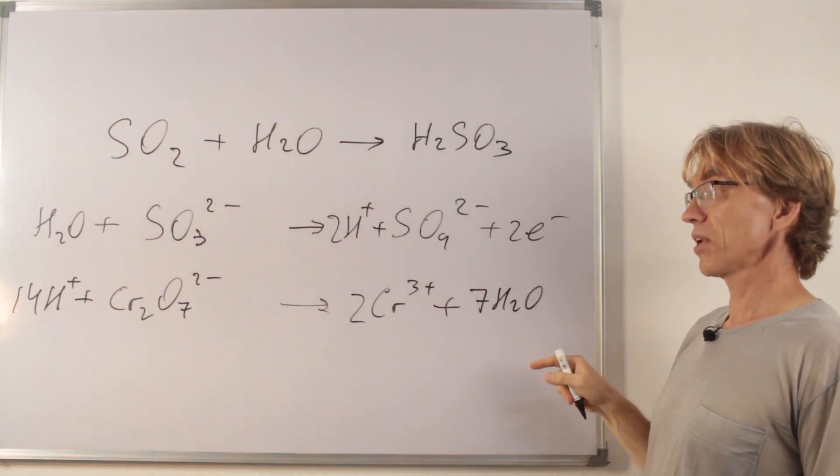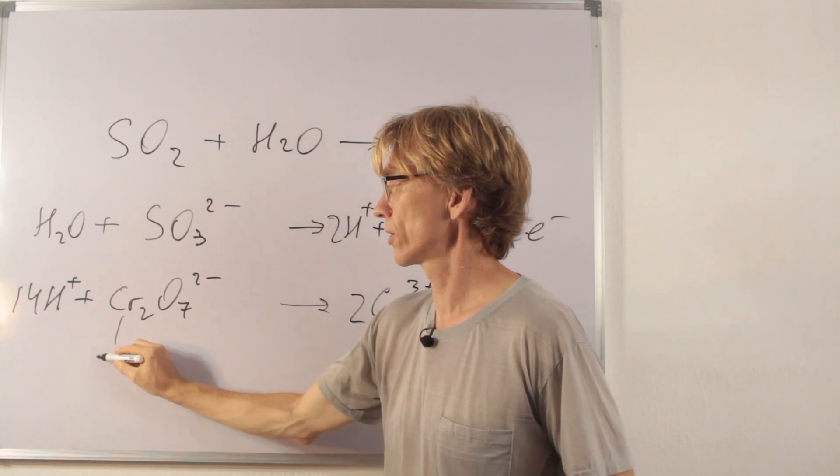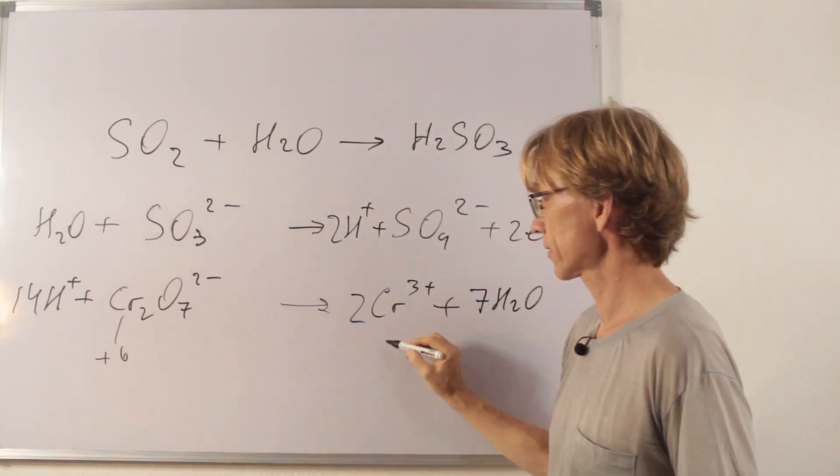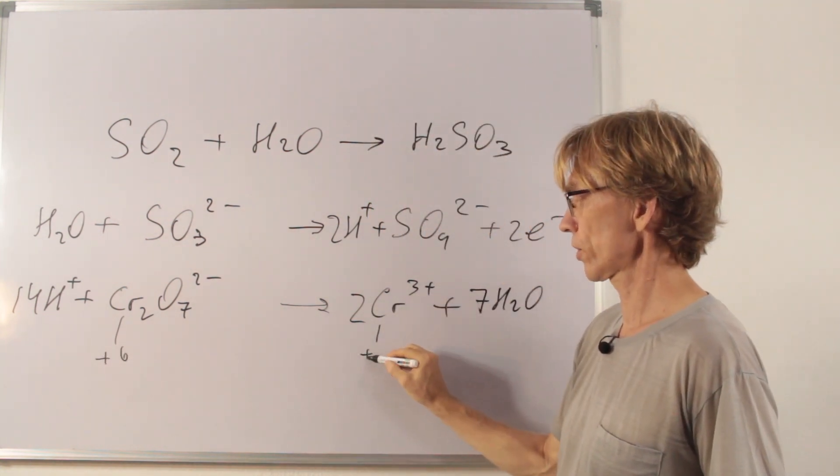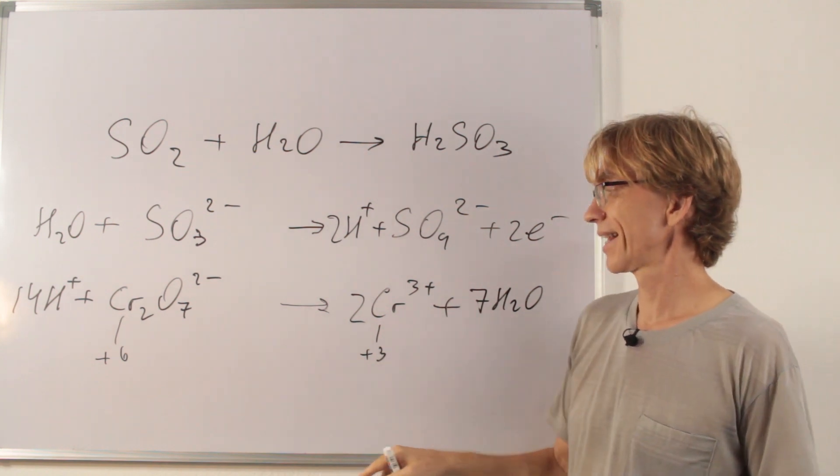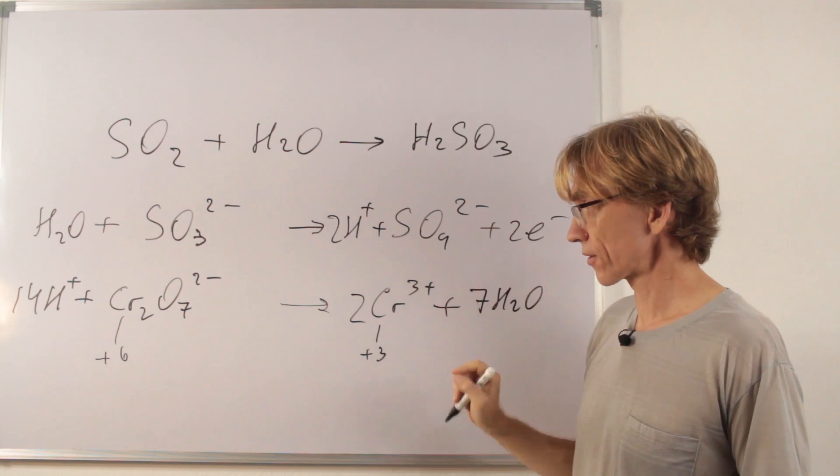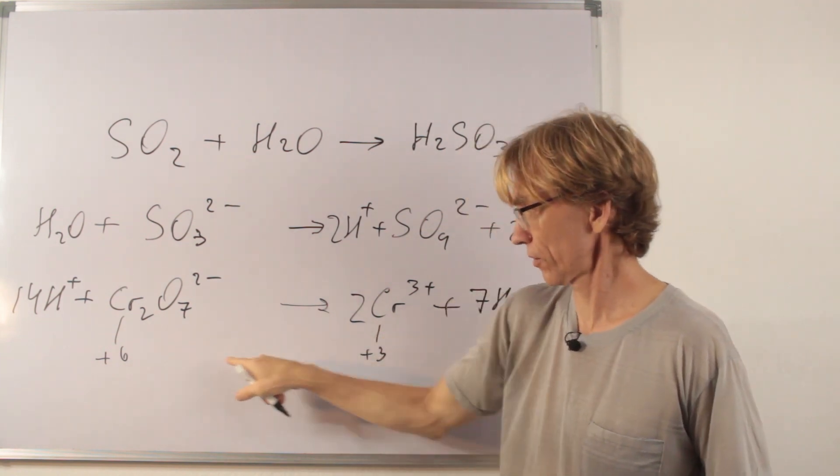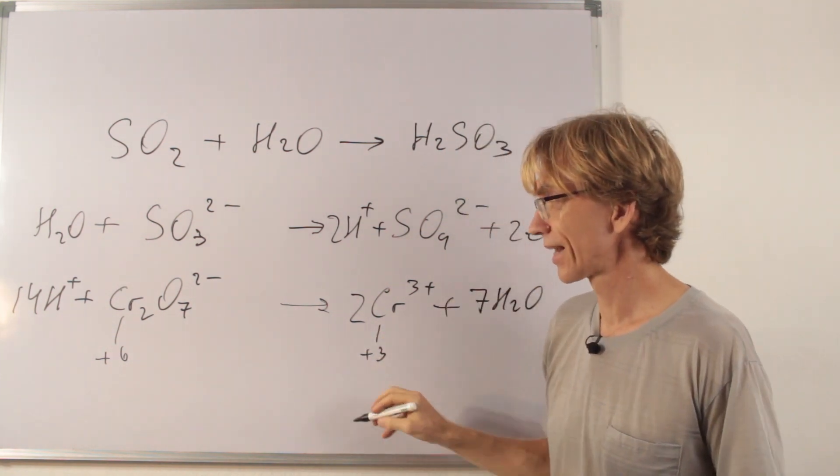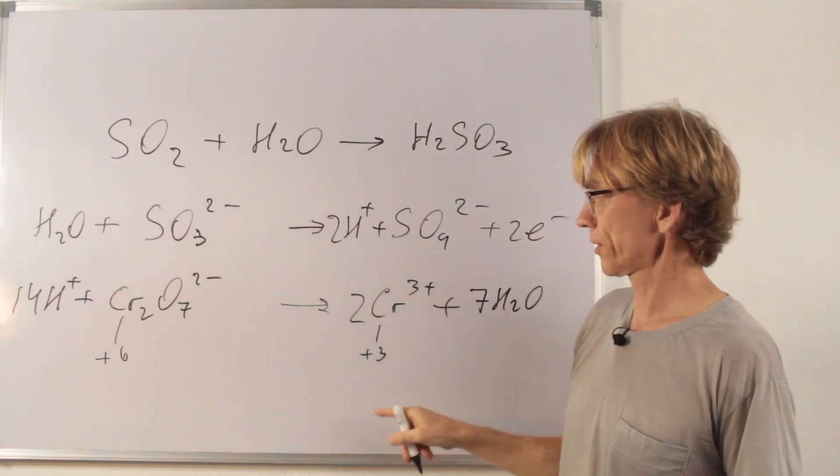And now taking care of electrons. Here oxidation state is plus 6 and here equal to the charge plus 3. It means each chromium atom received three electrons. Difference between 6 and 3. But there are two chromiums here.